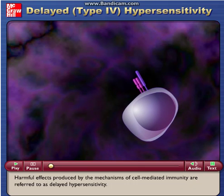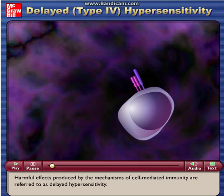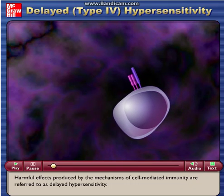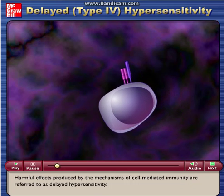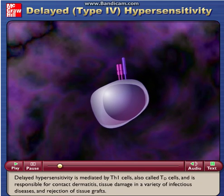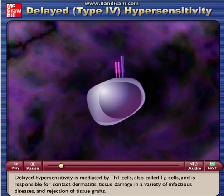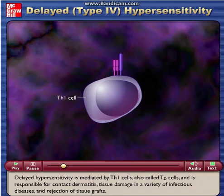Harmful effects produced by the mechanisms of cell-mediated immunity are referred to as delayed hypersensitivity. Delayed hypersensitivity is mediated by Th1 cells, also called Td cells, and is responsible for contact dermatitis, tissue damage in a variety of infectious diseases, and rejection of tissue grafts.